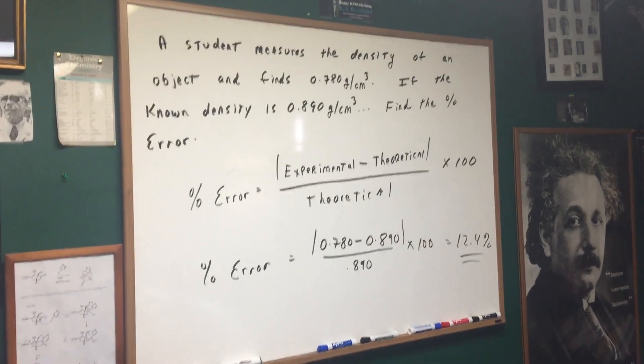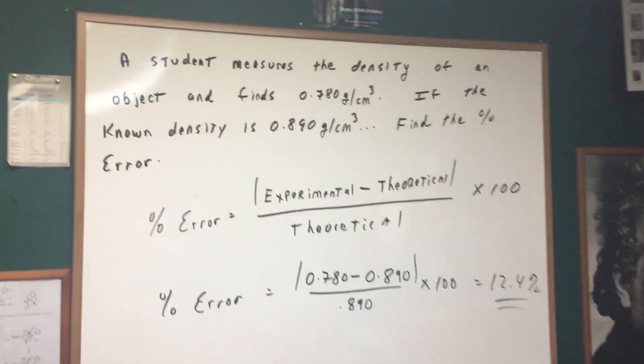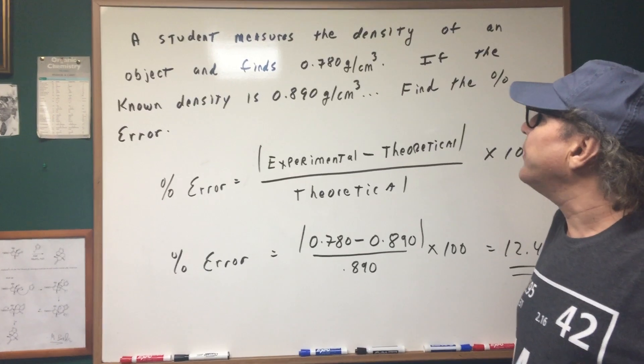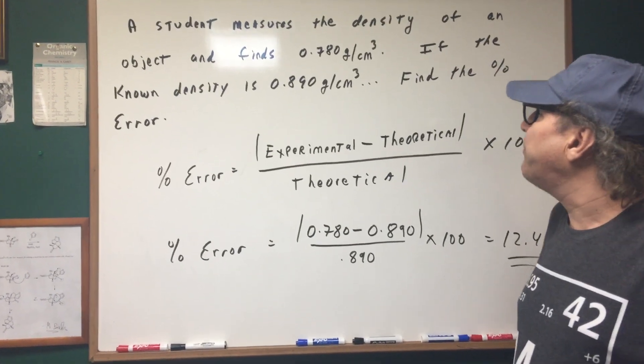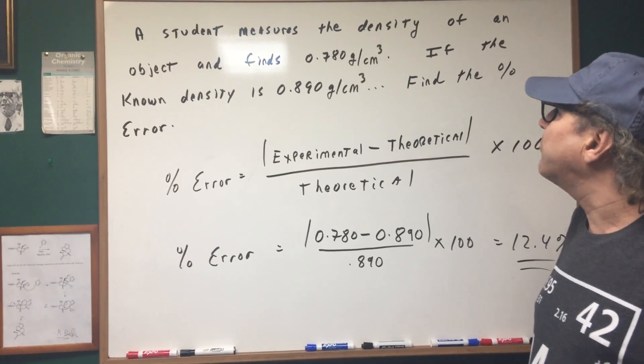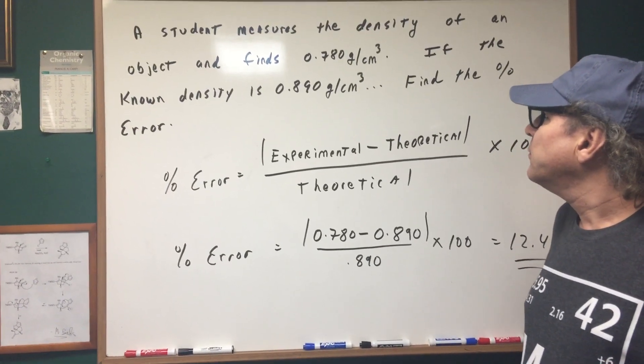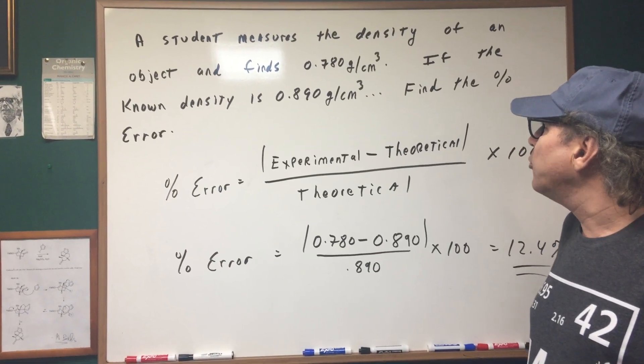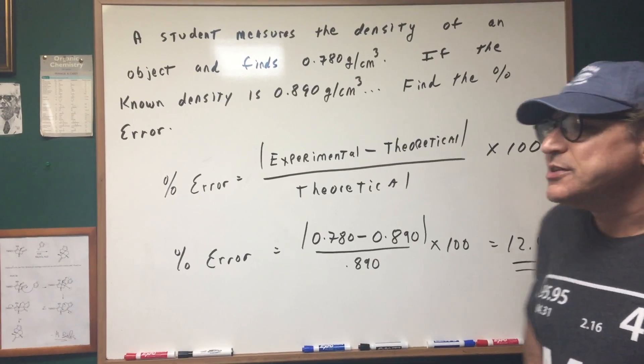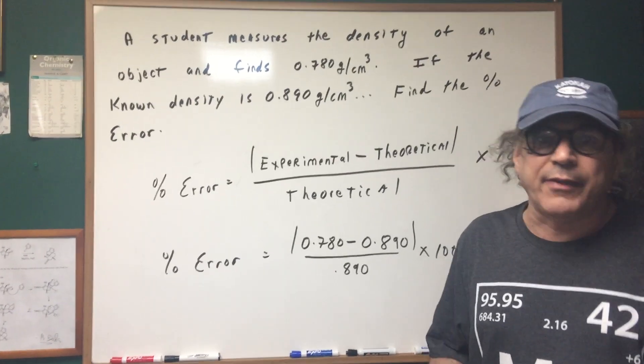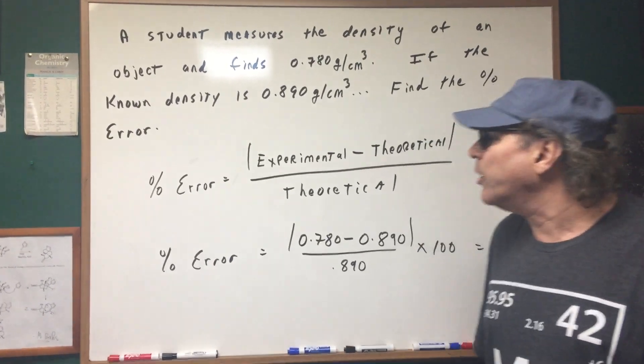Let's do one more question that I think you'll enjoy. So that was pretty straightforward on how to do percent yield. Let's do one on percent error. A student measures the density of an object and finds the density to be 0.78 grams per centimeter cubed, and the known density is 0.890 grams per centimeter cubed. This is a common experiment in the freshman lab. We make the student do the density and then we see how close it was to the actual.